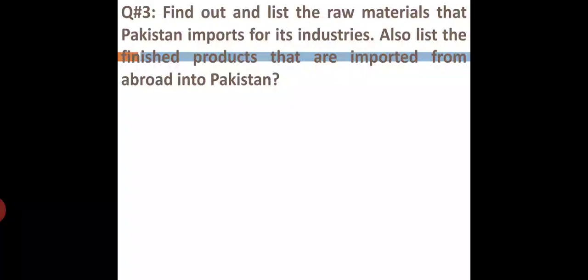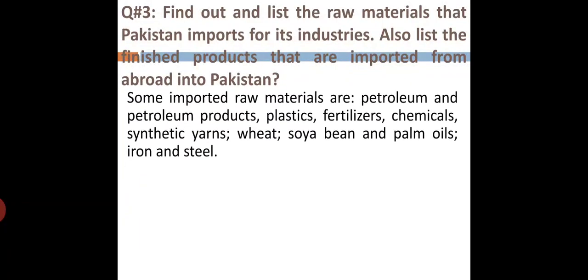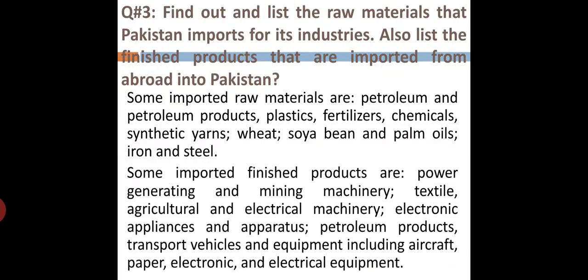Here is question number three: Find out and list the raw materials that Pakistan imports for its industries. Also list the finished products that are imported from abroad into Pakistan. Some imported raw materials are petroleum and petroleum products, plastic, fertilizers, chemicals, synthetic yarns, wheat, soya beans and palm oils, iron and steel. Some imported finished products are power generating and mining machinery, textile, agriculture, electrical machinery, electric and electronic appliances, petroleum products, transport vehicles and equipment including aircraft, paper, electronic and electrical equipment.